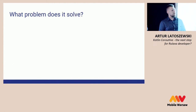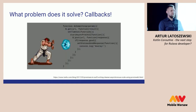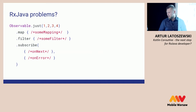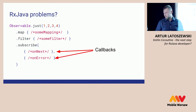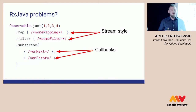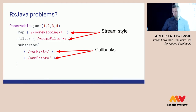What problems do coroutines solve? Of course, callbacks — we all hate callbacks. We know callback hell and the pyramid of doom. But as I said before, RxJava also solved some problems with callbacks. Does RxJava have any problems? Yes, it still has callbacks — onNext, onError, there are still callbacks. And there is the stream style: not everybody loves stream style, and it is very limited when you want to work with something outside the stream. Writing a custom operator for the stream is hard, and you end up writing a lot of boilerplate code.